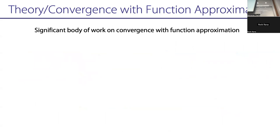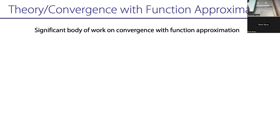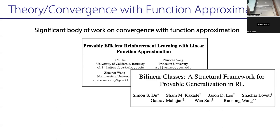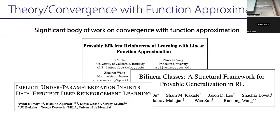The second interesting area is understanding theoretical properties. When things are tabular, Q-learning converges — the proof is readable and makes sense. But when you go to function approximation, even linear function approximation, you can show that unless you're careful, these methods will diverge arbitrarily, especially when you're off-policy using bootstrapping with function approximation. This gets worse going from linear to bilinear, quadratic, or polynomial. With big neural nets, you see lots of empirical phenomena that we don't have good theoretical explanations for. Trying to understand convergence properties of deep RL methods is very much unclear.